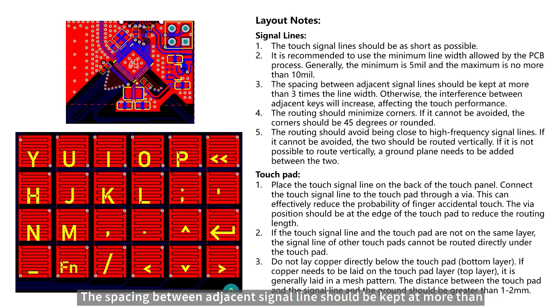The spacing between adjacent signal lines should be kept at more than 3 times the line width. Otherwise, the interference between adjacent keys will increase, affecting the touch performance. The routing should minimize corners. If it can't be avoided, the corner should be 45 degrees or rounded.